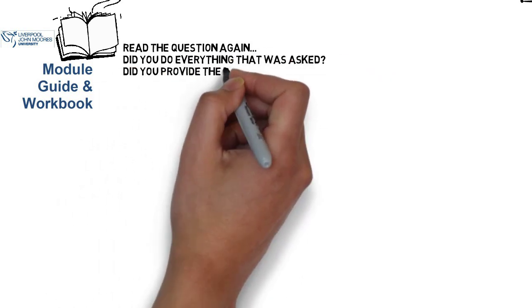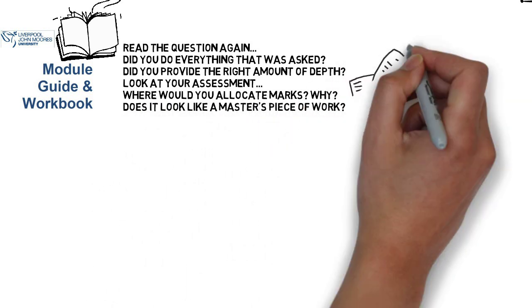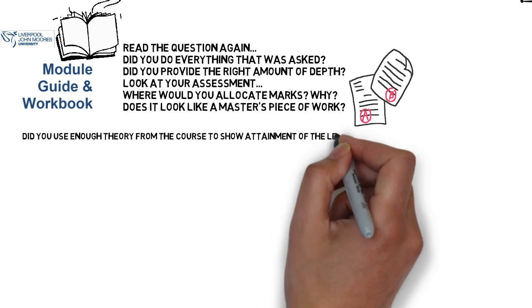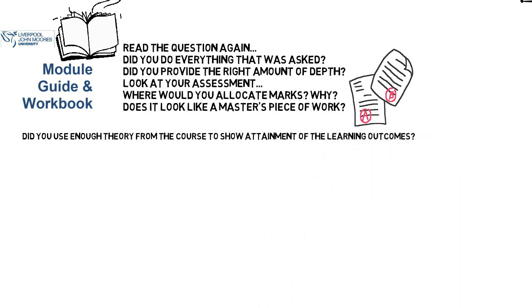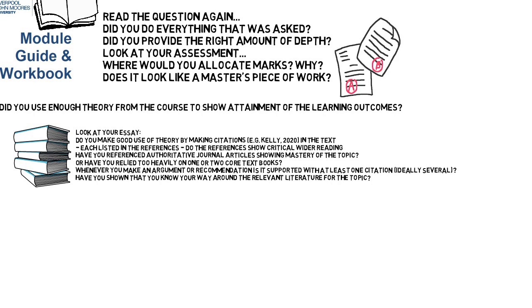Have a look through the module guide and workbook. Read the assignment details — specifically read the question again, because if you don't answer the question you won't get the marks. It's useful to mark your own work when you look at the mark scheme in the question itself and try to understand what the examiner was looking for. At master's level you're expected to show a great deal of wider reading, so have a look at your reference list — did you read enough? Did you show that you'd read enough by putting appropriate citations to support the arguments you were making in your essay, or on the relevant PowerPoint slides if it was an assessed presentation?